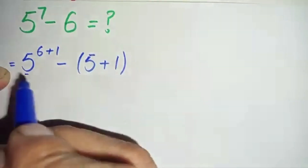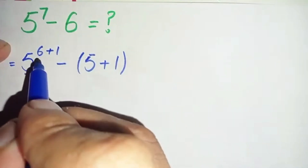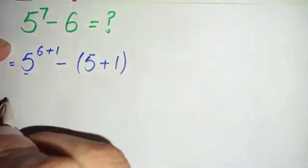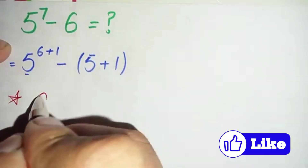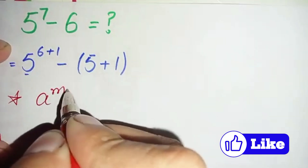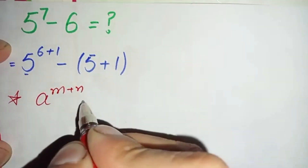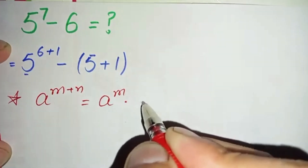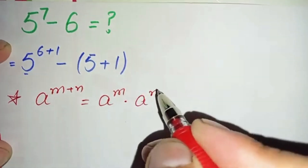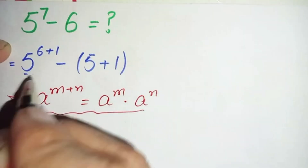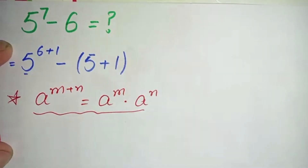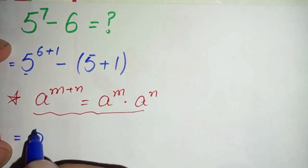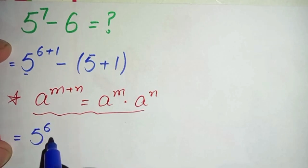In this equation we will use an exponential math property and we will split these powers over this base. We will use the exponential property: a raised to power m plus n can also be written as a raised to power m times a raised to power n. Using this property, this equation will become 5 raised to power 6 times 5 raised to power 1.